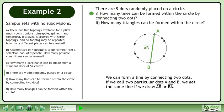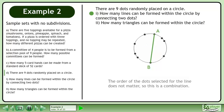We can form a line by connecting two dots. If we call two particular dots A and B, we get the same line if we draw AB or BA. The order of the dots selected for the line does not matter, so this is a combination.